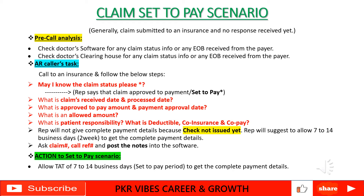You will also ask: what is the approved-to-pay amount? Since the claim will be paid soon, ask 'May I know the approved-to-pay amount please?' Also ask: what is the payment approval date — on which date will the payment get approval? Additionally ask what the allowed amount is and what the patient responsibility is — PR1 is deductible, PR2 is co-insurance, PR3 is copay.